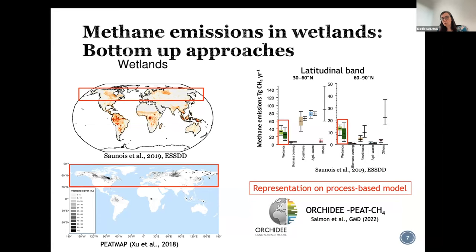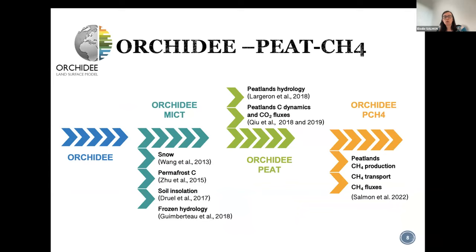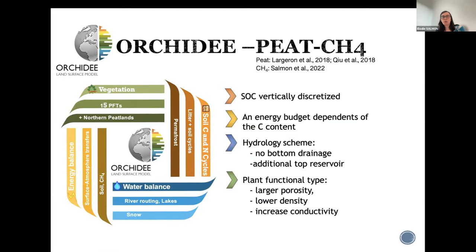The model that I use and am working with is the ORCHID land surface model. We have a version with peat and methane emission that comes from more than 10 years of work by various people to add permafrost and snow processes, peatland hydrology and carbon dynamics, and then I added the methane model on top of all that. The peatlands are represented with vertical discretization of the carbon stock, the energy budget depends on the carbon content, and the hydrology has been modified to reduce infiltration and contain more water in the soil carbon. The vegetation functional type has been adapted to reproduce peatland ecosystems.